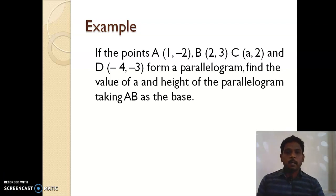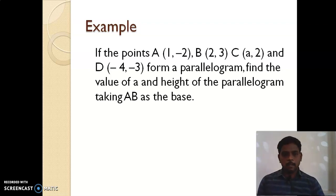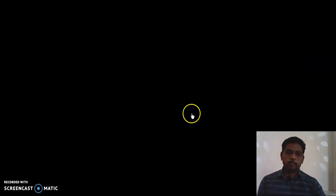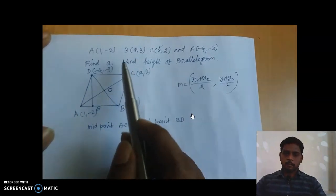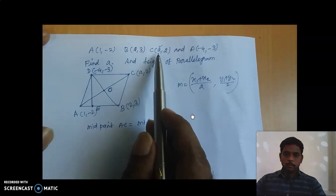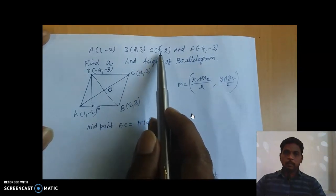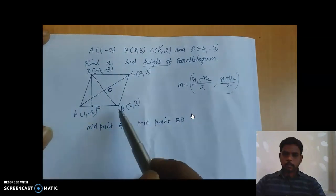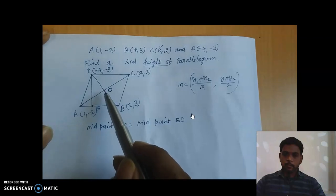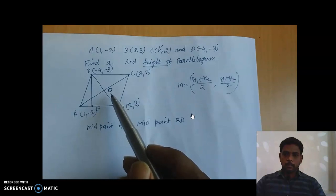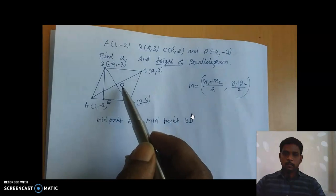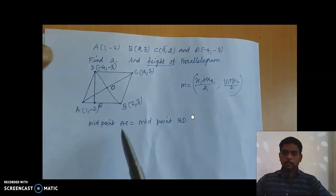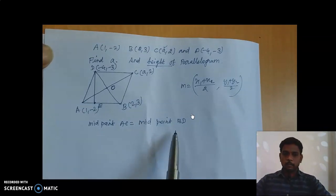Look at the next example. If the points A(1,−2), B(2,3), C(a,2), and D(−4,−3) form a parallelogram, find the value of 'a' and the height of the parallelogram taking AB as the base. The diagonals are AC and BD, and they have the same midpoint O, because according to the diagonal property of a parallelogram, the diagonals bisect each other. Therefore O is the midpoint of both diagonals, so the midpoint of AC equals the midpoint of BD.